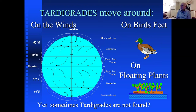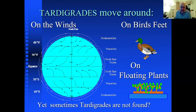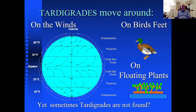How do tardigrades spread around the world? The belief is they're carried on the wind — perhaps on pieces of dust, on birds' legs or wings, maybe in the digestive tracts of animals, or on floating plants. Though it's hard to know definitively, wind dispersal is the leading hypothesis.